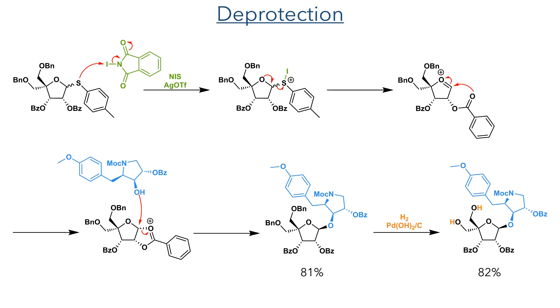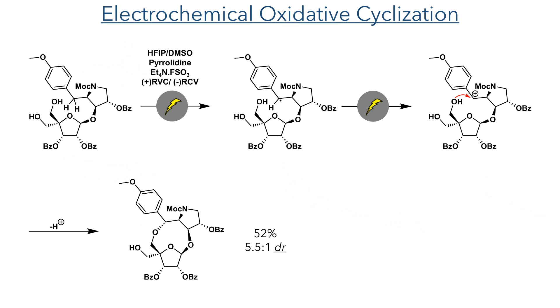The benzoyl ethers could then be deprotected using hydrogen gas and Perlman's catalyst. With the glycosidic bond now formed, they could then carry out the critical macrocyclization reaction.